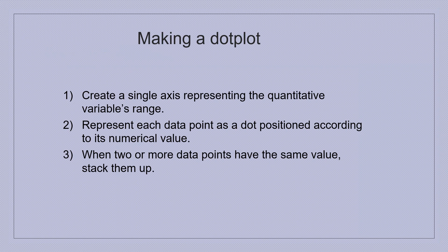When you are making a dot plot, always create a single axis which represents the variable, the quantitative variable. And you should have the range. In our example, it started from 0 to 12. Now represent each data point as a dot, and if there are multiple values, stack them one above the other.